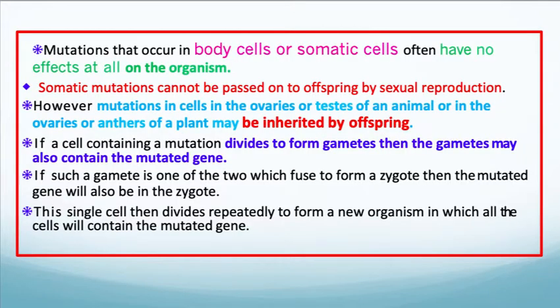Mutations that occur in body cells or somatic cells often have no effects at all on the organism. Many mutations in the body or somatic cells have no effect on that organism. Somatic mutations cannot be passed on to offspring by sexual reproduction. For example, if you're in the sun too much or laying in a tanning bed too much and you get mutations in your skin cells that lead to skin cancer, that cancer is not a gametic mutation. It does not get passed on to your children. It's a somatic mutation that happens only in your body cells and stays there.